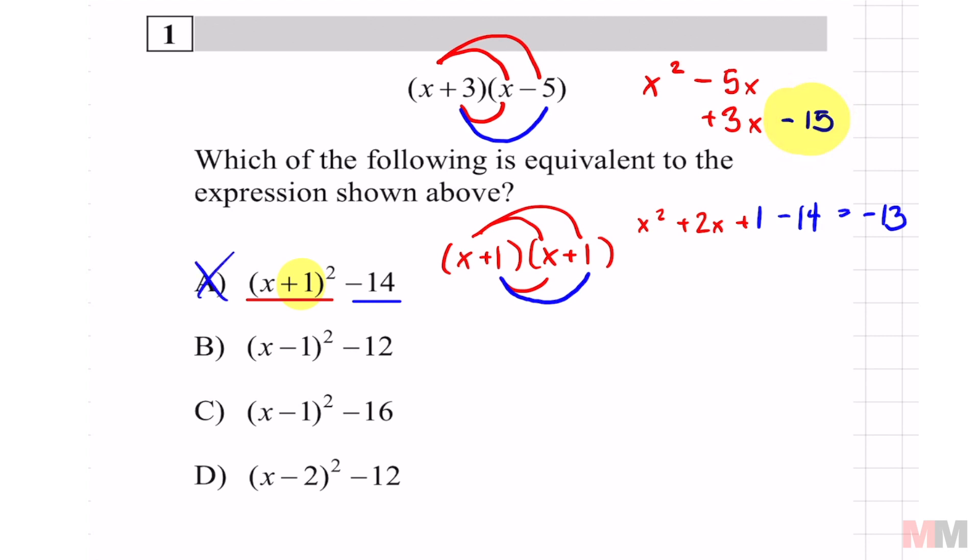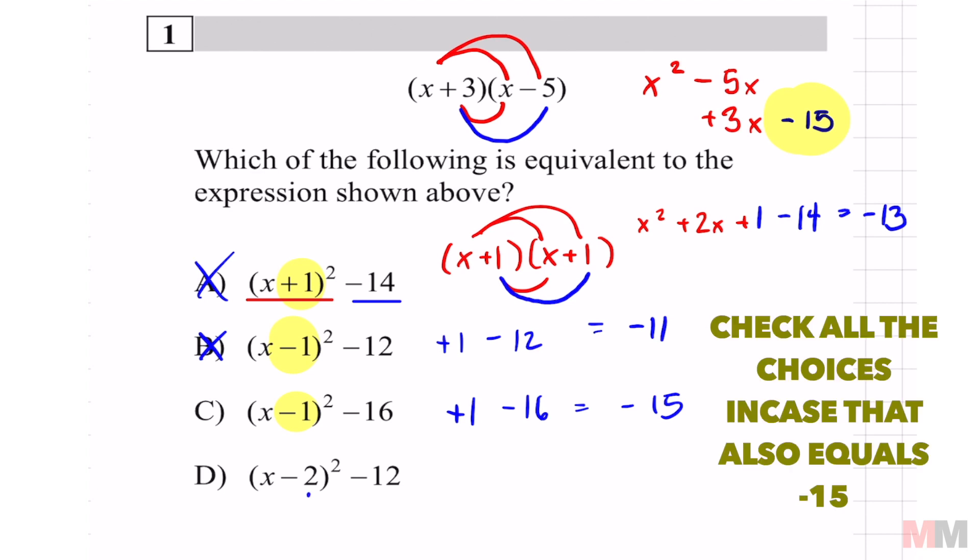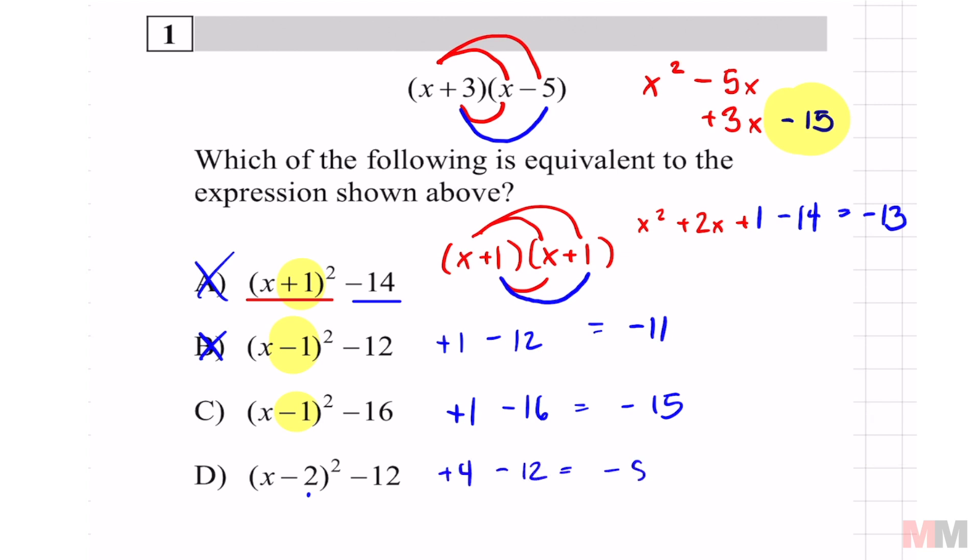So if I look at B, again, all I got to do is square that part. That's going to be positive one. And then minus 12 coming from this part. And that's obviously not going to be it because that's negative 11. So that's wrong. So some of these questions, you don't got to do the whole thing because there's no time for it. Looking at letter C, if I square this yellow part, that will get me positive one minus 16, which equals negative 15.